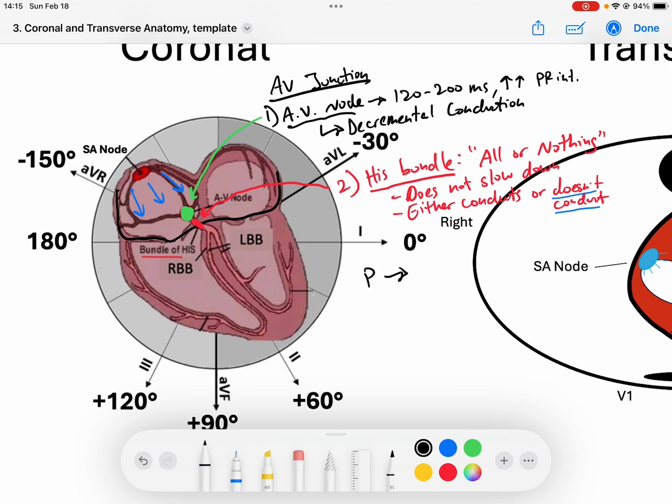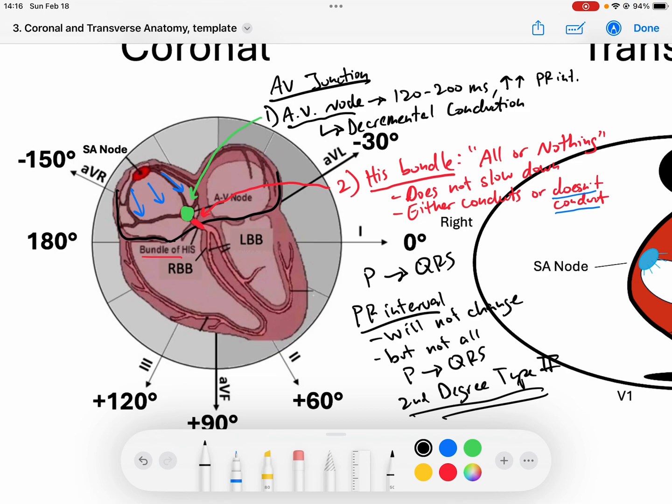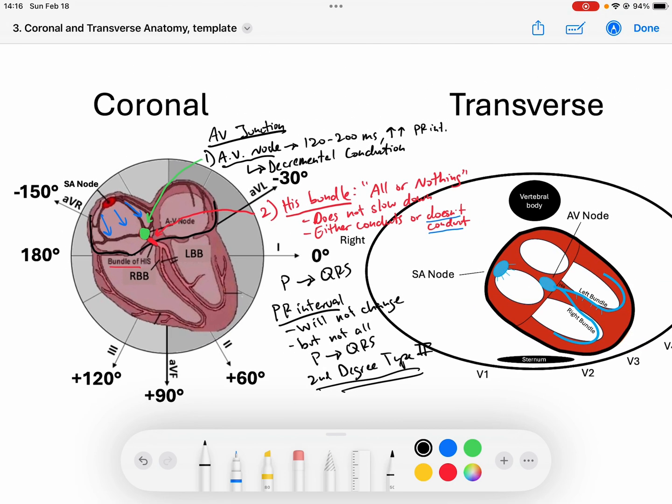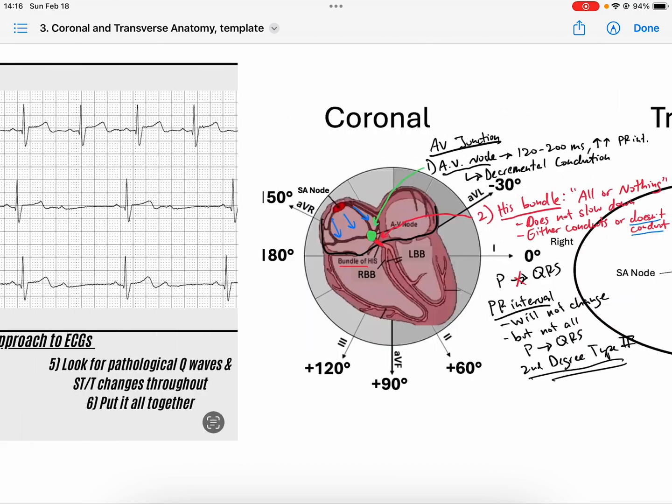When the His bundle becomes diseased, you will see where there are moments that it doesn't conduct. We know that when P waves conduct to QRS complexes, the interval that we measure is the PR interval. The PR interval is telling us what the AV junction is doing. Whenever the His bundle is diseased, my PR interval will not change. The PR interval will not change, but not all P's will conduct to a QRS in a second degree type 2 AV block.